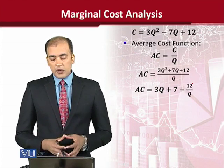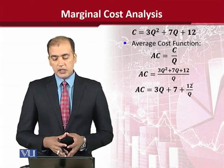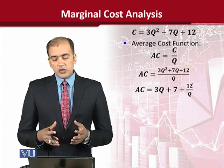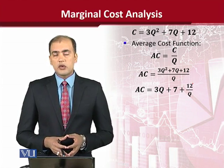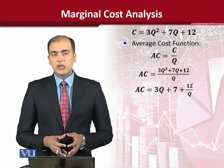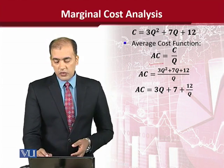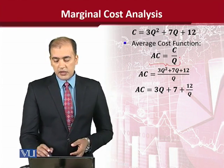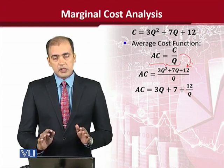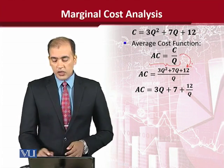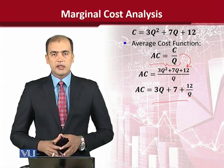Ab isse hum average cost function bhi derive kar sakte hain. Average cost function ko hum kaise karenge? Simply by taking the ratio of the total cost function with the output. As you can see the formula is given here. Cost function ki jo saari equation thi, humne substitute ki aur cancel out karke humne average cost function ko obtain kiya.